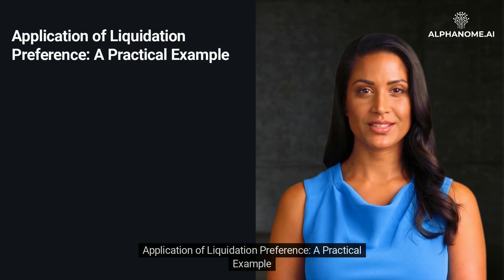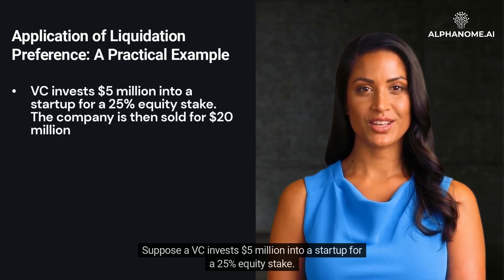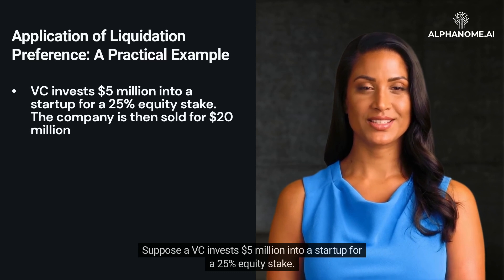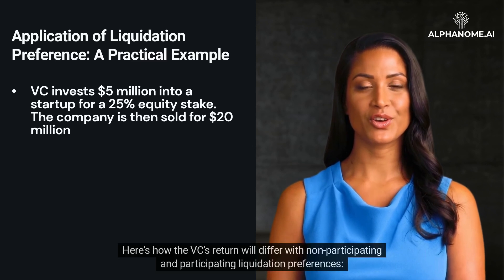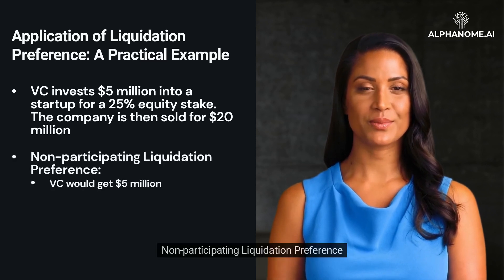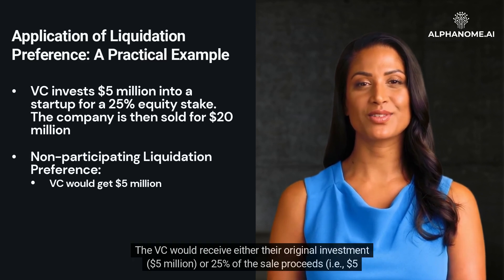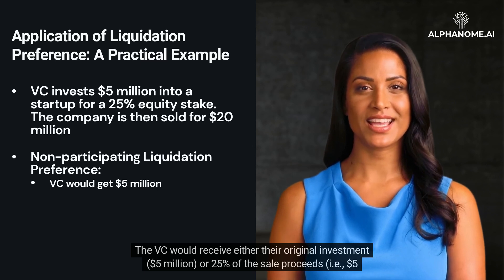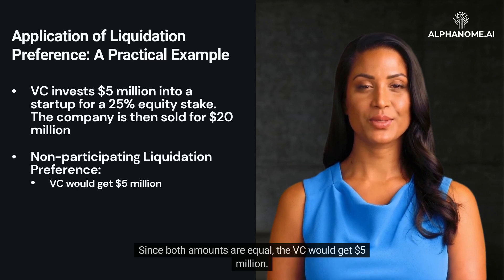Application of Liquidation Preference — A Practical Example. To better illustrate these concepts, let's take a simple example. Suppose a VC invests $5 million into a startup for a 25% equity stake. The company is then sold for $20 million. Under non-participating liquidation preference, the VC would receive either their original investment of $5 million, or 25% of the sale proceeds — i.e., $5 million (which is 25% of $20 million) — whichever is higher. Since both amounts are equal, the VC would get $5 million.